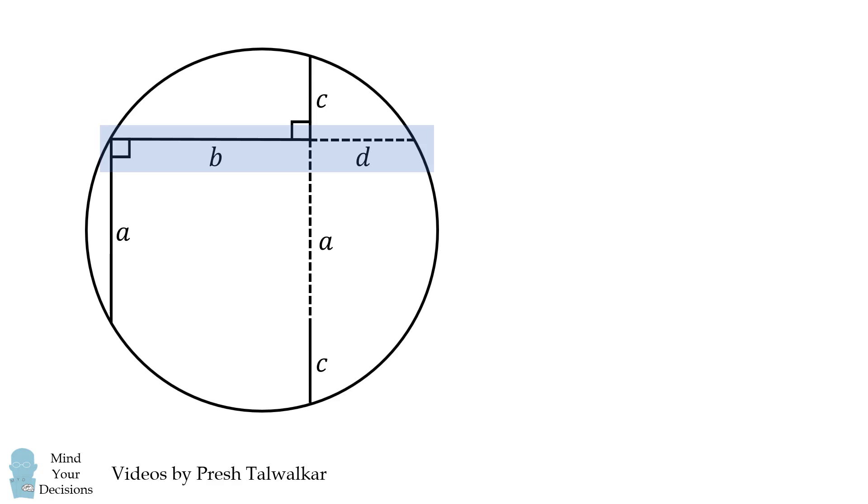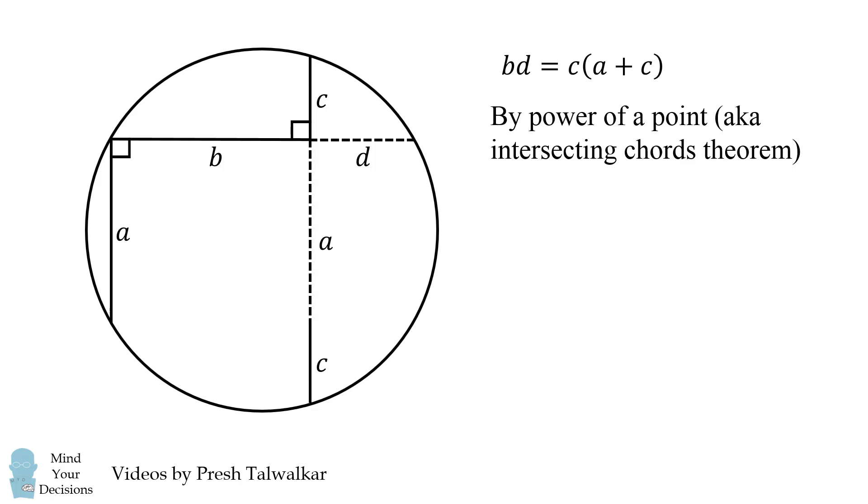Now here is one chord of the circle, and here is another chord of the circle. So by power of a point, or the intersecting chords theorem, we have the following expression. B times D is equal to C times the quantity A plus C.